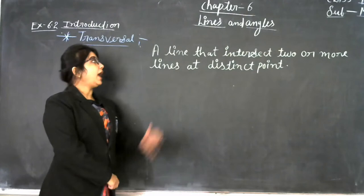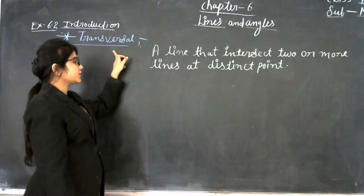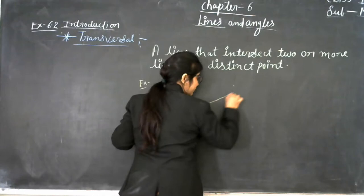Good morning students. Today we will discuss chapter 6, that is Lines and Angles, and the exercise 6.2 introduction. The topic is a transversal. The definition of a transversal is a line that intersects two lines at distinct points — that is called the transversal. For example, see the figure.